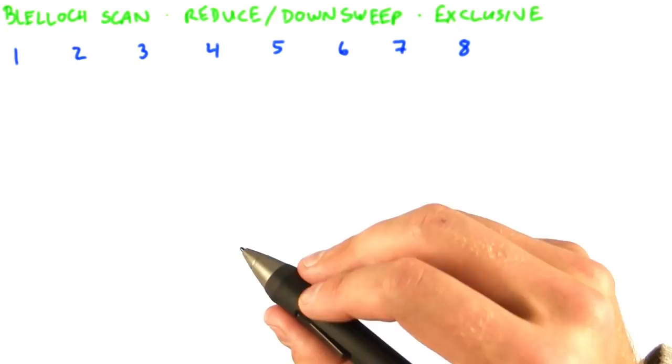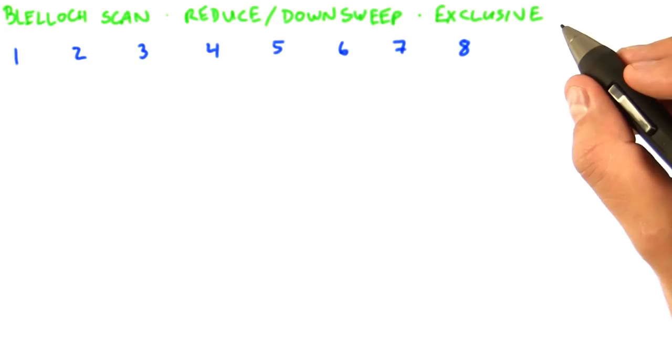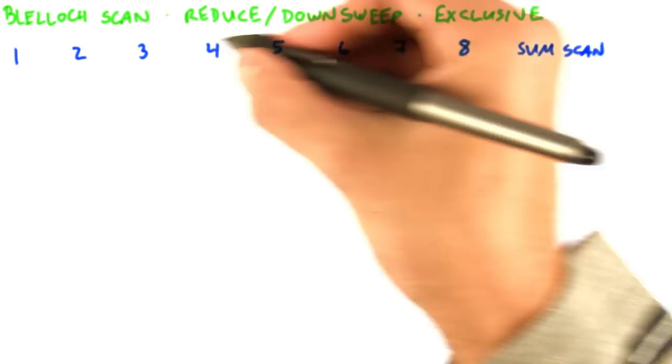So let's take a look at another example. This algorithm has two stages, first a reduce and then a down sweep. And let's note that this is an exclusive scan. So we're going to do a sum scan that is exclusive on the input array 1 through 8. And so it's going to have two stages.